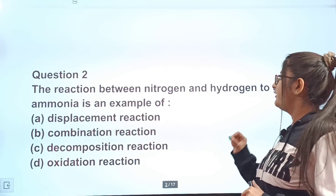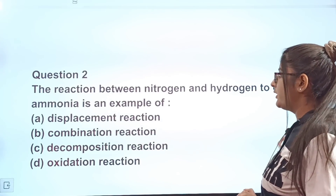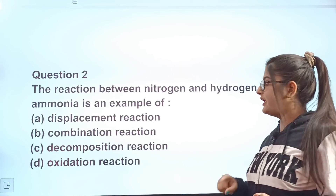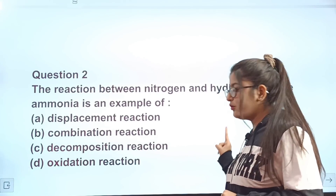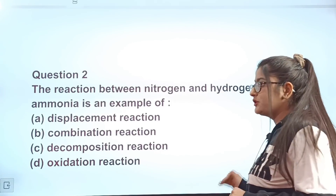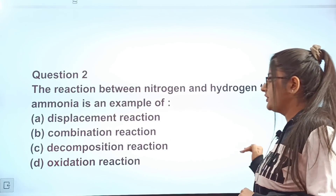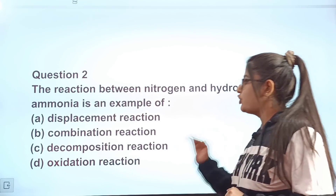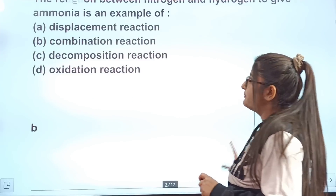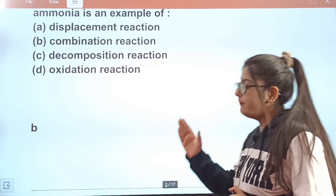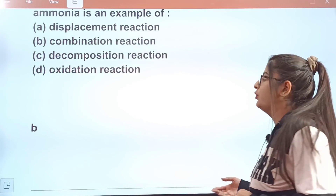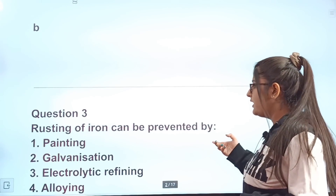Question number 2: The reaction between nitrogen and hydrogen to give ammonia is an example of? Option A: displacement reaction. Option B: combination reaction. Option C: decomposition reaction. Option D: oxidation reaction. The correct answer is B, combination reaction. I hope you all had this answer. Let's move on to our next question.